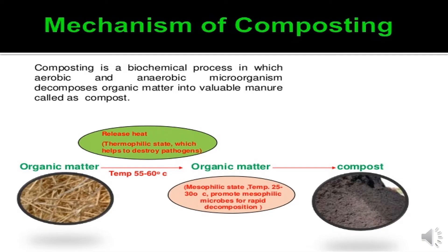What is the mechanism of composting? Composting is a biochemical process in which aerobic and anaerobic microorganisms decompose organic matter into valuable manures called compost. If you maintain the temperature at 55 to 60 degrees centigrade, there is release of heat where the thermophilic state prevails, which helps to destroy pathogens and decompose material. After that, it comes to the mesophilic state where the temperature is maintained at 25 to 30 degrees centigrade, which promotes mesophilic microbes for rapid decomposition. After a certain period, following these steps, it converts to compost.